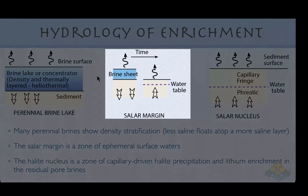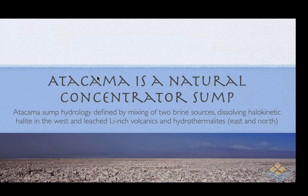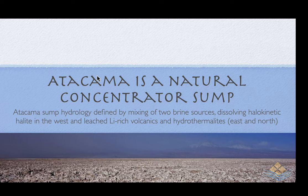Then we have the intermediates between these two end members — ephemeral brine sheets which dry up and transition into a salar or sabkha system — quite typical of many salar margins in the Andean salars. Let's focus on Salar de Atacama, which is a natural concentrator sump for lithium brines. There we see two brine sources feeding into the evaporating capillary brines: an extensive region of stratovolcanoes which are quite lithium-enriched, with associated geothermal hydrothermal brines moving into the system, typifying the east and north of the Salar de Atacama valley.